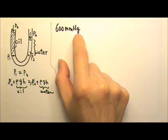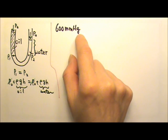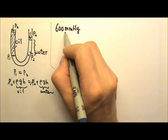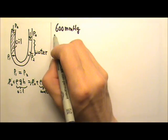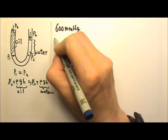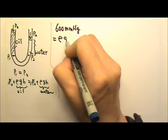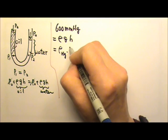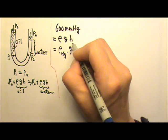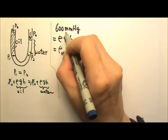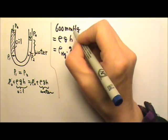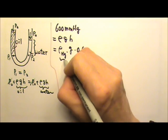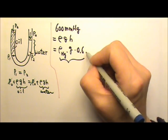We also use millimeter mercury, centimeter mercury, or meter mercury as units for pressure. What this means is that this is the pressure equivalent to a 600-millimeter-tall mercury column — the pressure produced by that mercury column, which is rho*g*h of the mercury. Since the column is 600 millimeters tall, the height in standard units is 0.6 meters, which gives us the pressure in pascals.